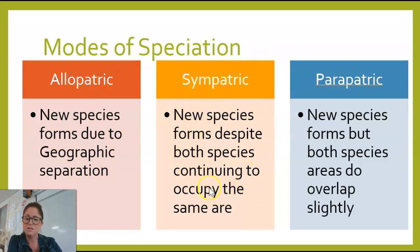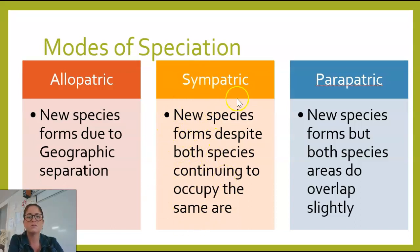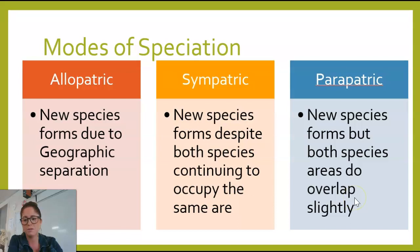Sympatric speciation is when the two populations are completely intertwined, occupying the same area, but one of them changes and becomes a new species. A good example is polyploidy, when a plant inherits an extra set of chromosomes and becomes a new species. This happens a lot with strawberries. Parapatric speciation is when two populations only have a slight overlap — they might exchange alleles every now and then, but not often, just because their ranges slightly overlap.